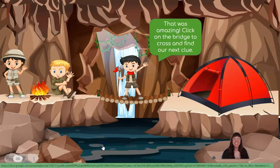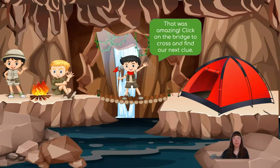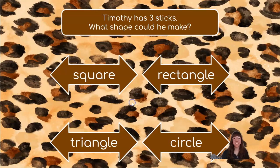That was amazing! Click on the bridge to cross and find our next clue. Where is the bridge? Very good! Timothy has three sticks. What shape could he make?